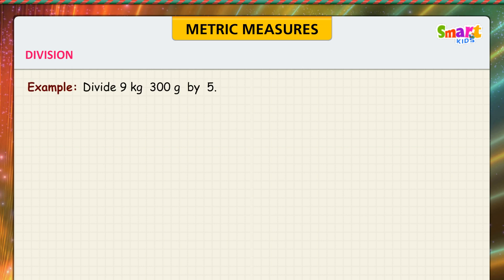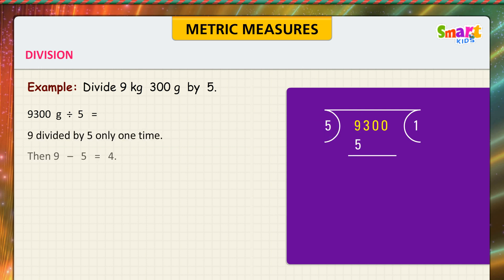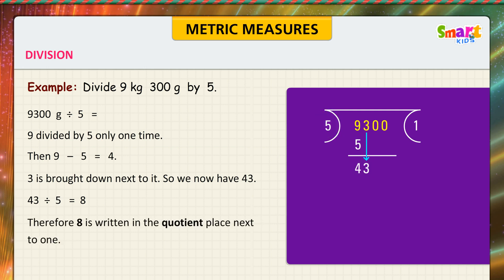Division example: divide 9 kilograms 300 grams by 5. Convert to 9300 grams divided by 5. 9 divided by 5 goes 1 time; 9 minus 5 equals 4. Bring down the 3, giving 43. 43 divided by 5 is 8. Therefore 8 is written in the quotient next to 1. 43 minus 40 is equal to 3.